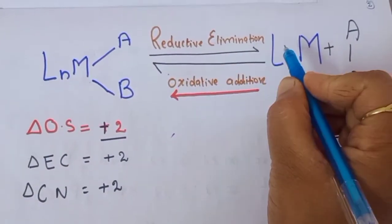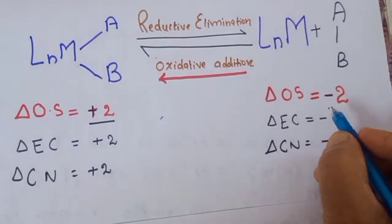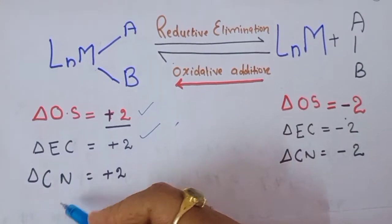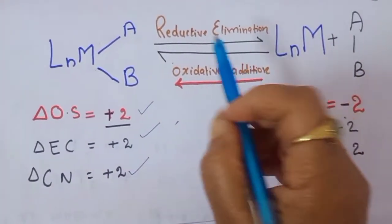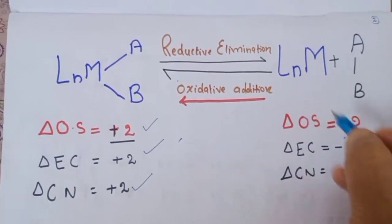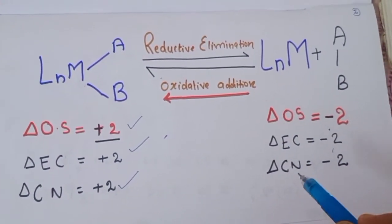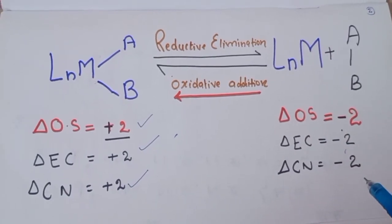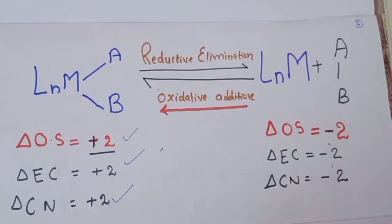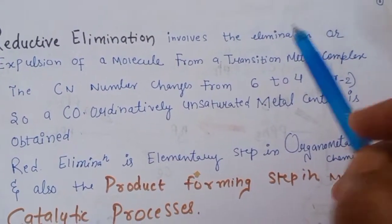To summarize: in oxidative addition, the oxidation state increases by +2, electron count increases by +2, and coordination number increases by +2. In reductive elimination, the oxidation state decreases by −2, electron count decreases by −2, and coordination number decreases by −2.